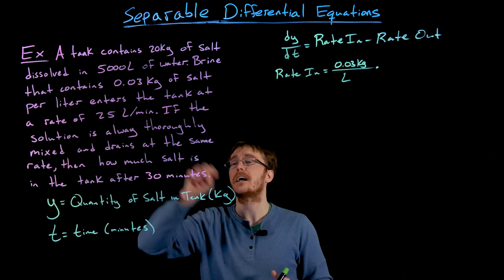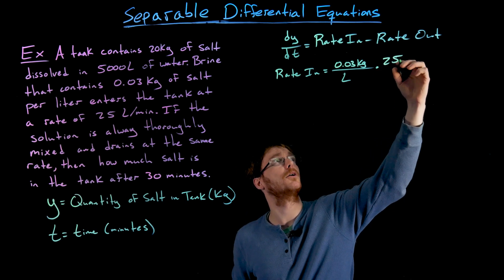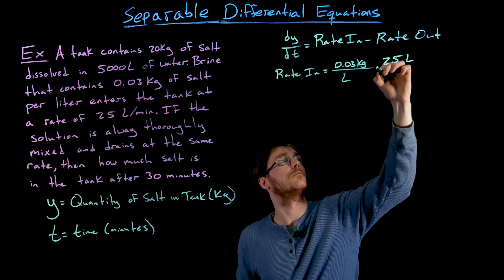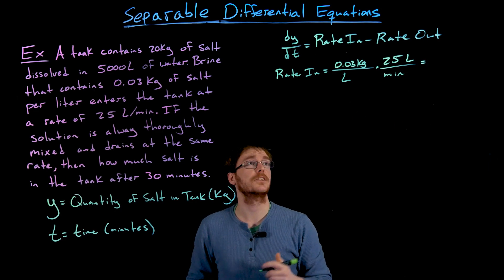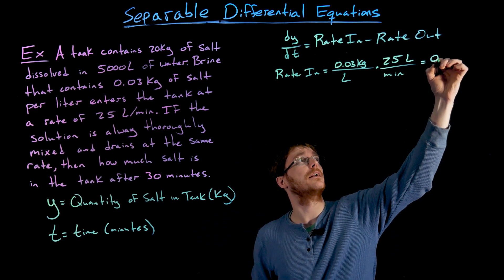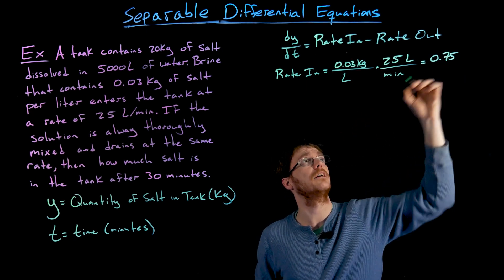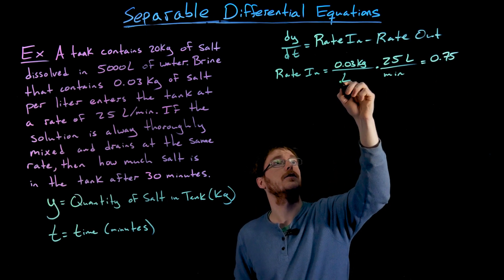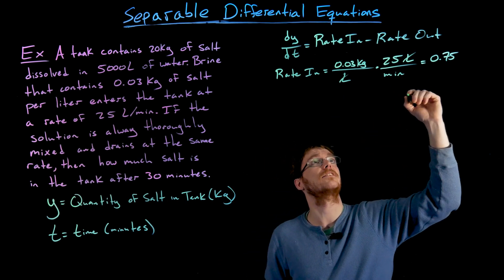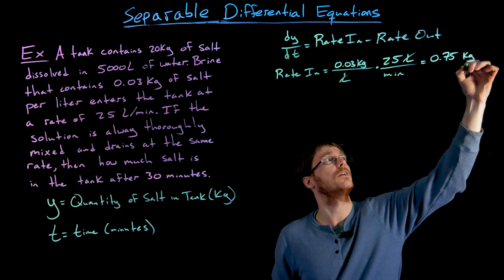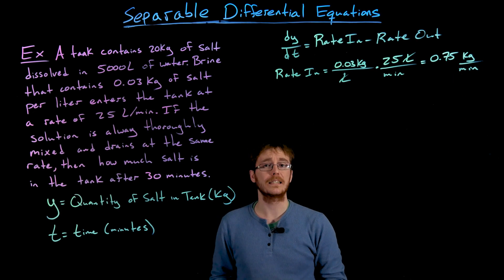We're told 25 liters of brine enter the tank per minute. Multiplying 0.03 kilograms per liter by 25 liters per minute, the units of liters cancel out, giving us 0.75 kilograms per minute — exactly the rate in that we needed.